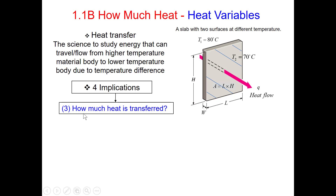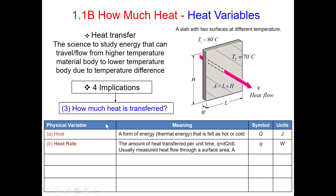The third implication is about how much heat is transferred. The first variable is heat, which is an energy form that we feel as hot or cold. The second variable is heat rate, which is the amount of heat transferred per unit time. It is represented by lowercase q with the unit W (watts).